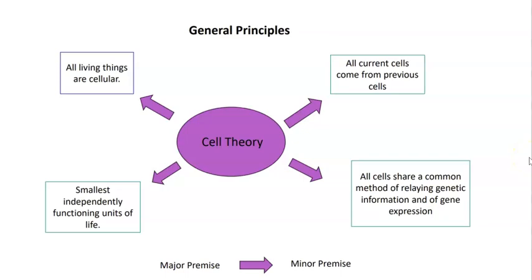In the theory itself, we begin with the statement that all living things are cellular. All living things are cellular, so there are no instances of a living thing having been found which is not in fact composed of a cell or multiple cells.